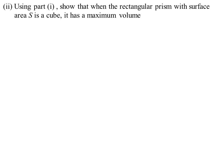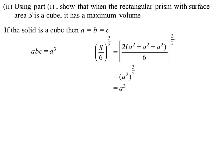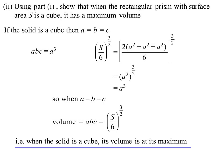When the shape is a cube, A equals B equals C, and the volume ABC equals A³. Substituting into the expression (S/6)^(3/2) also gives A³. So when the solid is a cube, the volume equals exactly (S/6)^(3/2), meaning the cube achieves the maximum possible volume for a given surface area.